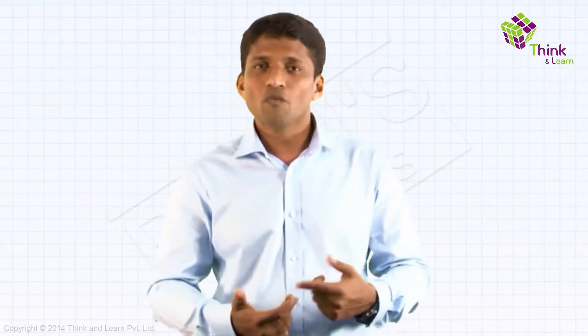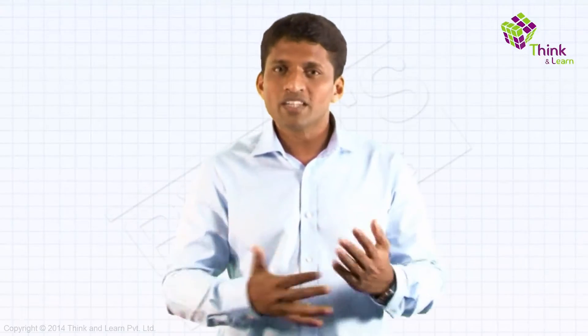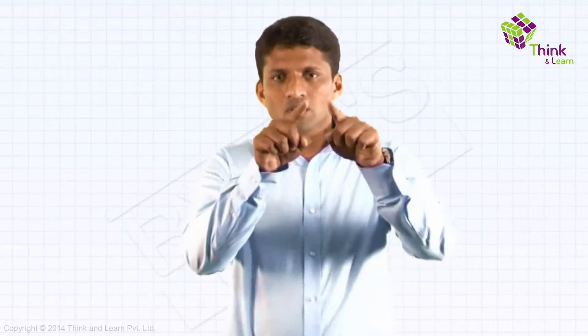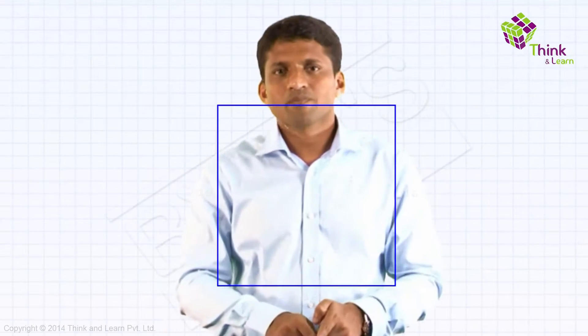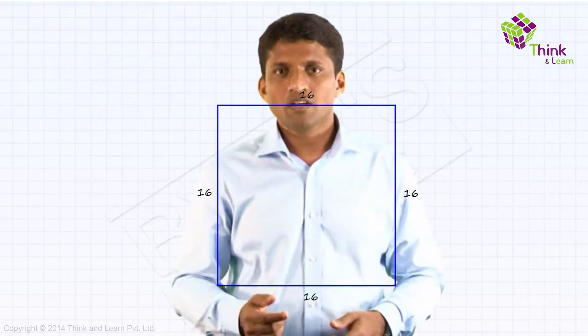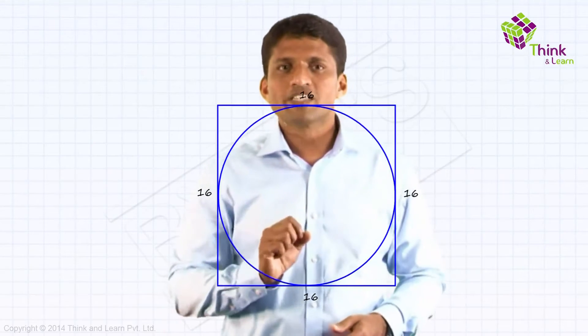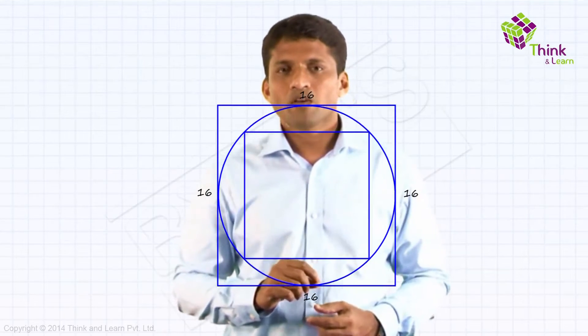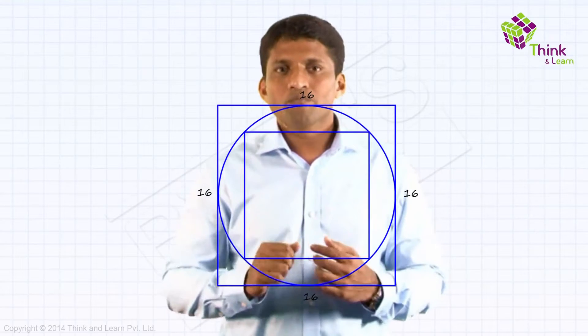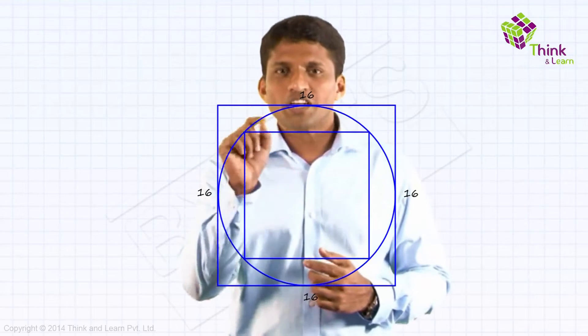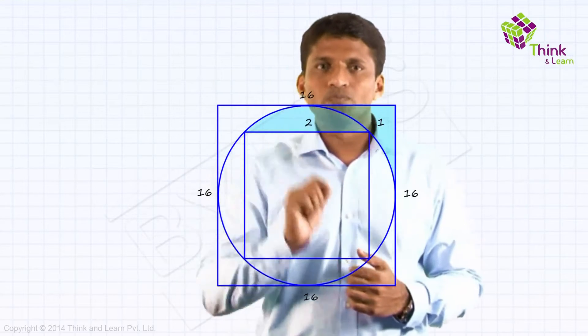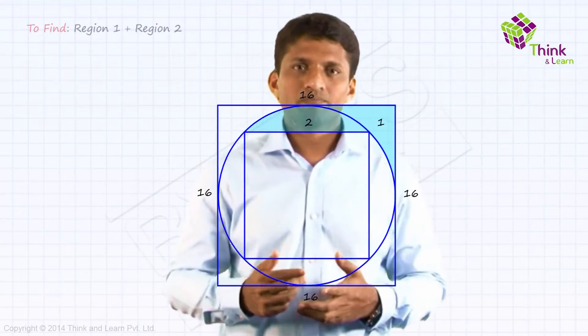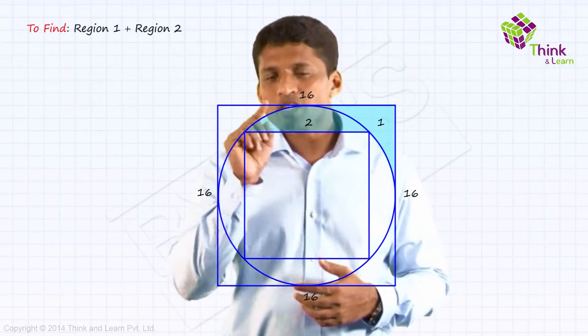I am going to show you how we can actually improve the way you think when you look at diagrams. You will understand that by the time I finish discussing this question. So let me give you the question. Take a square with side 16. Now put the maximum circle inside. And inside that circle, put the maximum square. Now in this diagram, two regions are shaded. Let me number them as 1 and 2. You have to find region 1 plus region 2.